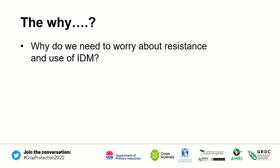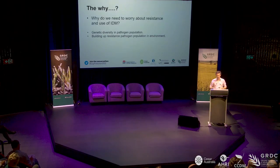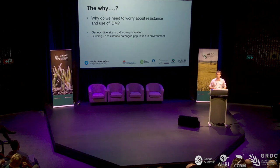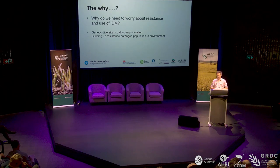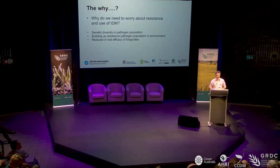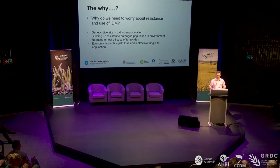So the why — why do we need to worry about disease and the development of resistance? The genetic diversity within pathogen populations increases the likelihood of changes that may lead to resistance. By repeatedly spraying the same modes of action or same actives, we select for the resistant population, controlling non-resistant populations and promoting the build-up of resistant populations. This leads to reduced fungicide efficacy, lost modes of action, and economic impacts such as yield loss and ineffective spray applications.